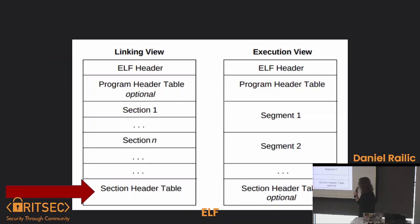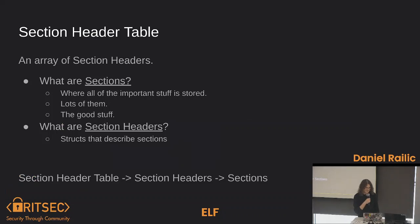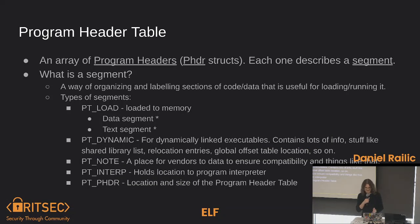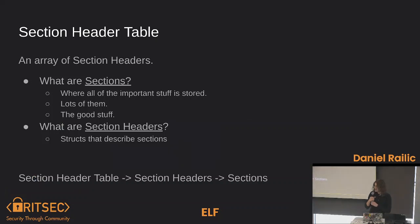Now let's talk about the section header table. Remember, this is necessary for the linking view but not necessarily for the execution view. Section header table is an array of section headers — very similar to how the program header table is an array of program headers. What are sections? Sections are kind of where all the important stuff is stored. The assembly instructions for whatever the code is doing are going to be divided into sections. When you're doing reverse engineering, this is really where you want to look.